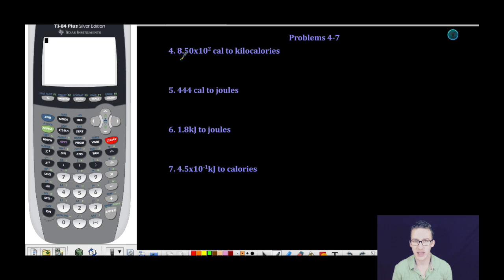The first thing we have here is 8.50 times 10 to the 2 calories. We want to convert that to kilocalories. And the relationship between calories and kilocalories is for every one kilocalorie, you've got a thousand calories.